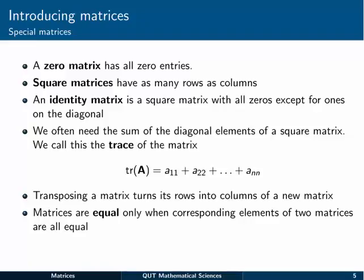An identity matrix is a square matrix with all zeros in it, except for the diagonal entries, which are ones. At various times, we'll need to sum the diagonal elements of a square matrix. And we call that quantity the trace of a matrix. And we write TR of A, or the trace of A, is equal to A11 plus A22, and so on, down to the final diagonal entry, ANN. That's just the sum of the elements on the diagonal of the square matrix.